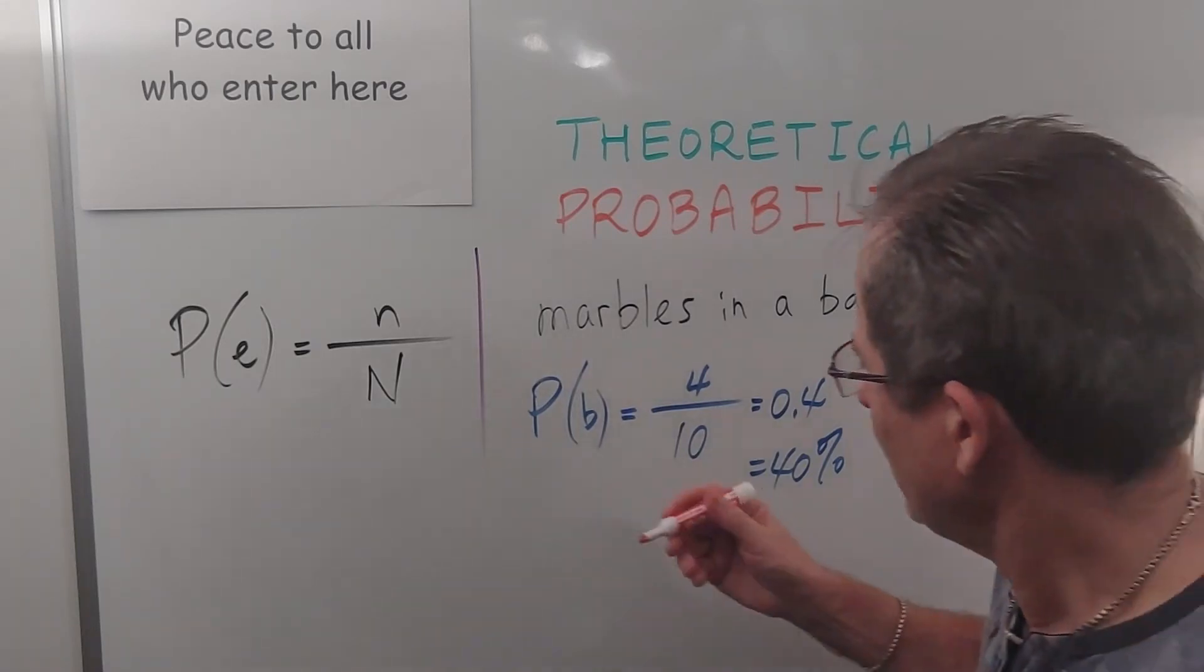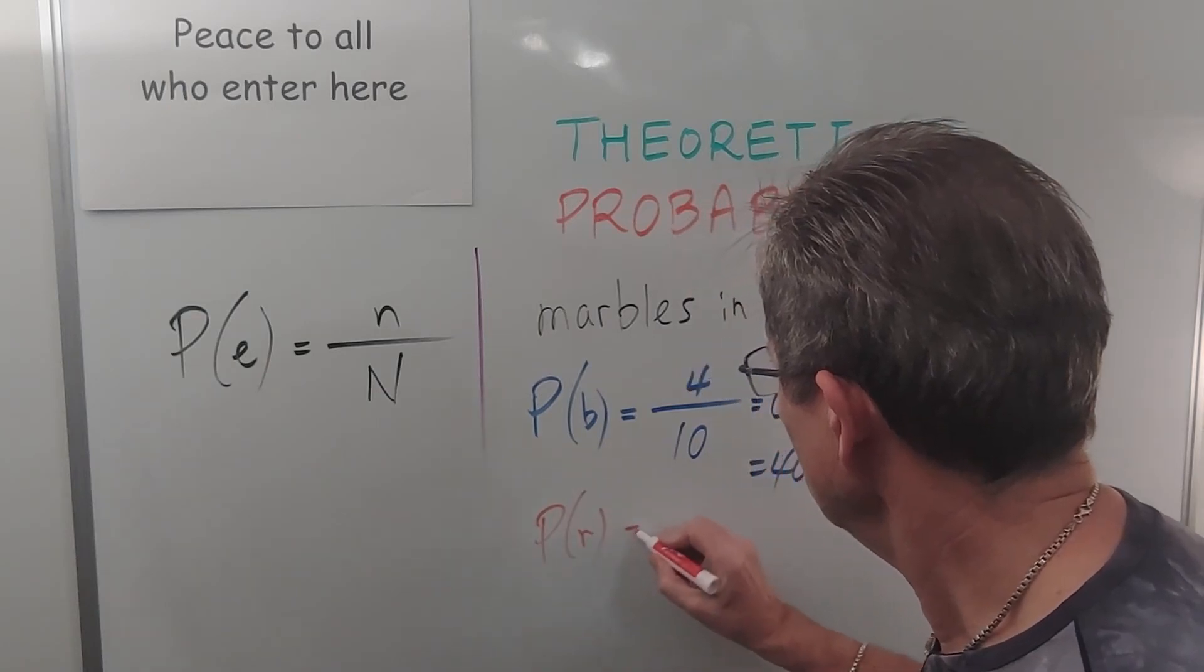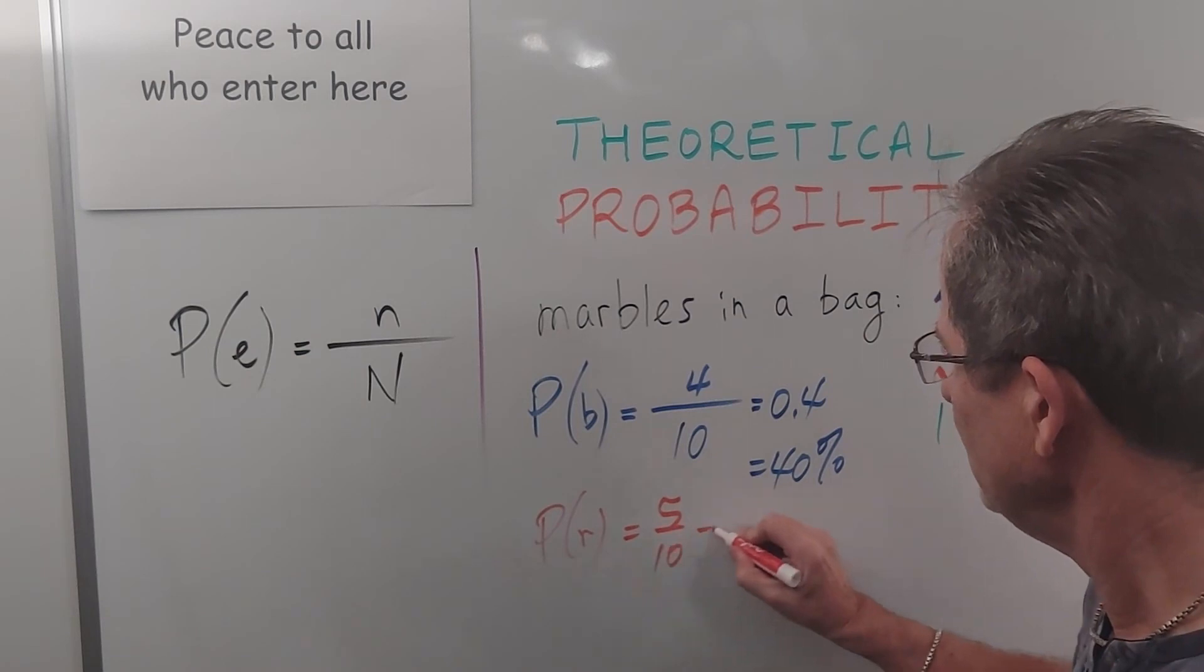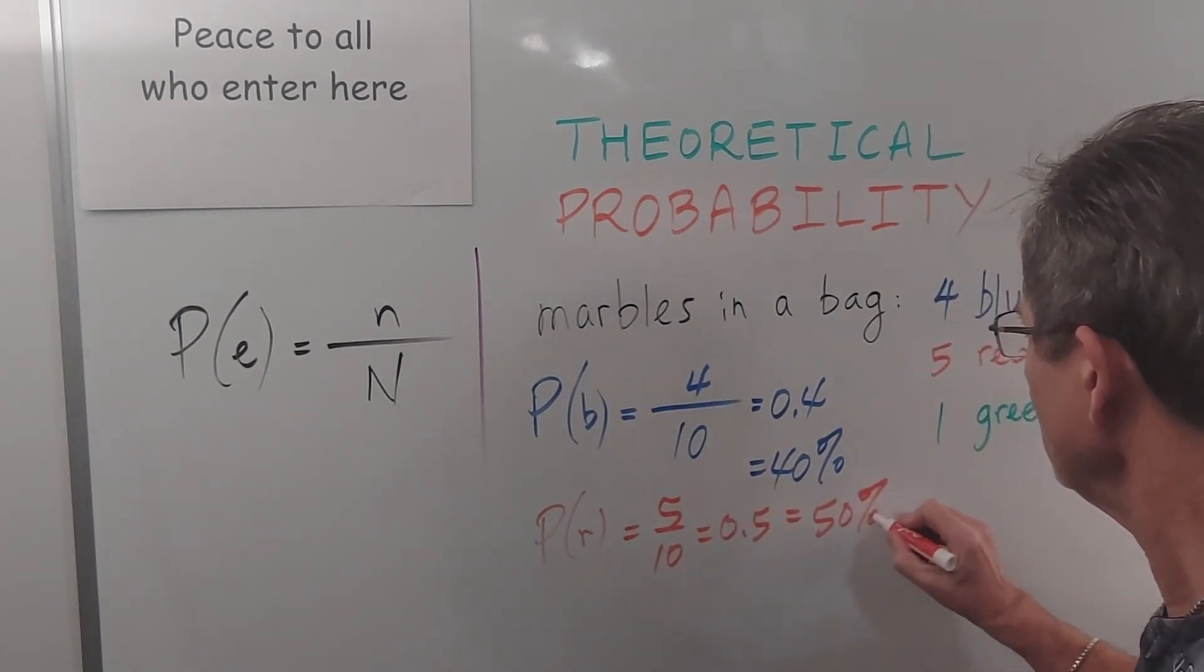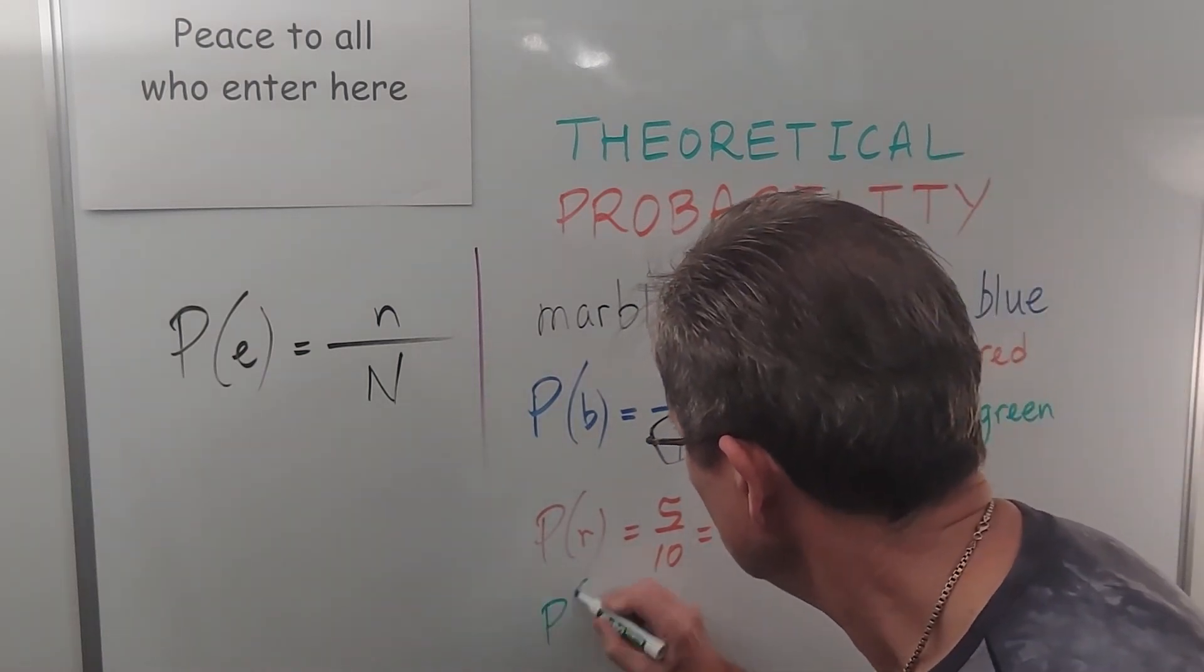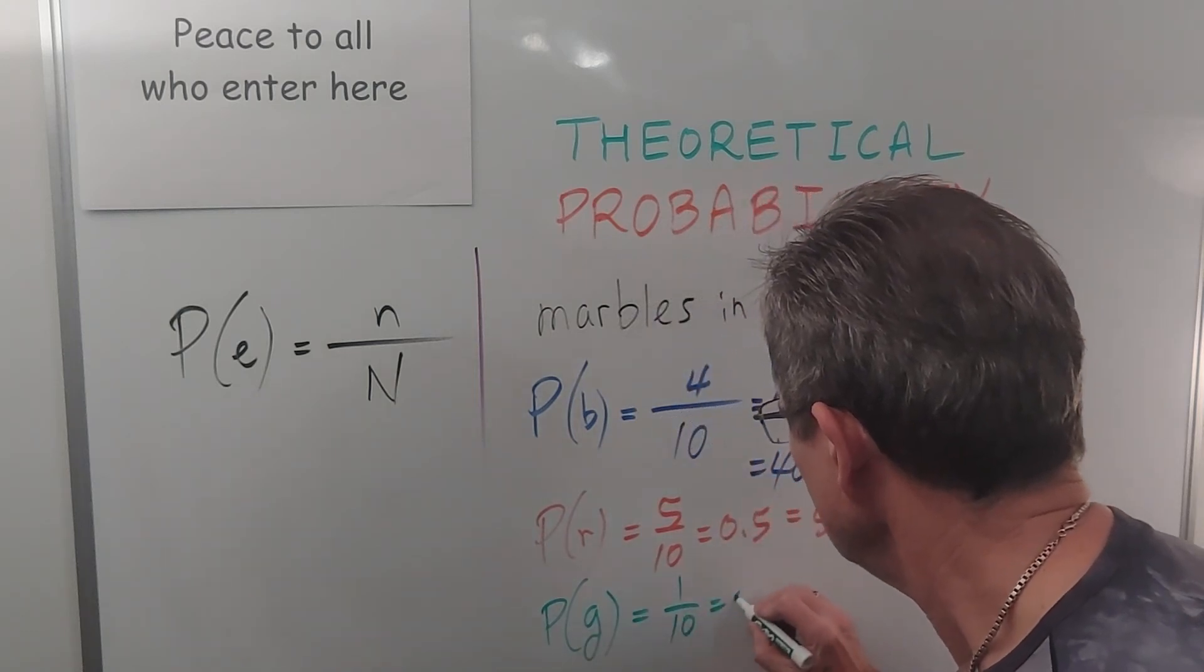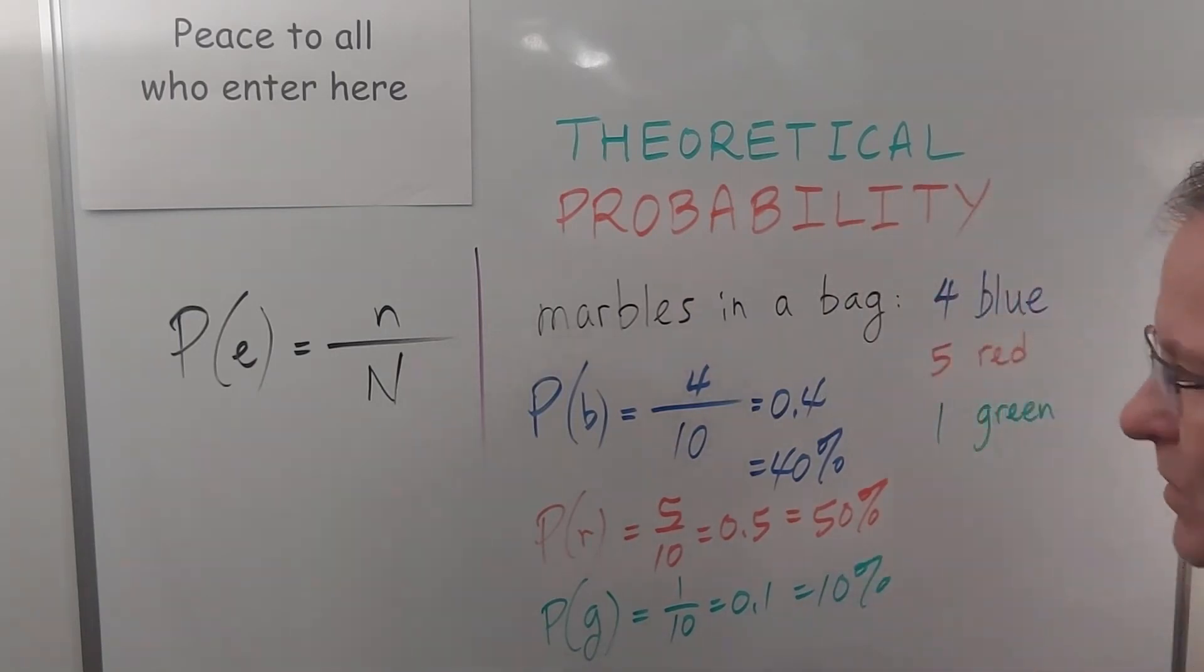Similarly, the probability of red green is 5 out of 10, 0.5 or 50%. And the probability of green is 1 out of 10, 0.1 or 10%.